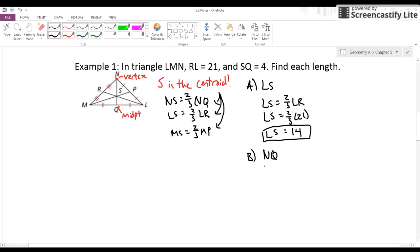So if SQ is 4, how's that going to help me find NQ? We can do a couple of things. If I can figure out what NS is, I can figure out NQ. Or, remember, if NS is two-thirds of NQ,